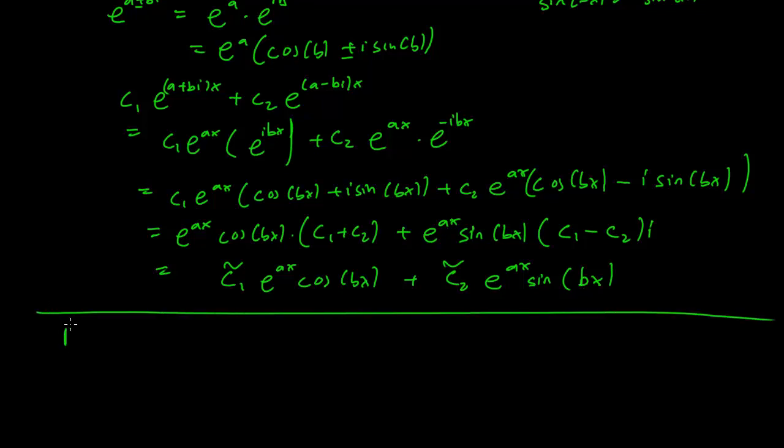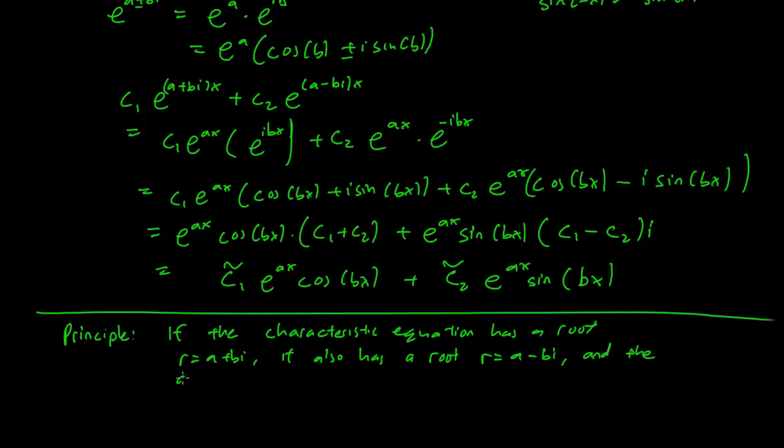And this means that we have a principle for complex roots. If the characteristic equation has a root r equals a plus b i, it also has a root r equals a minus b i. And the general solution of the differential equation contains the terms c1 e to the a x cosine b x plus c2 e to the a x sine b x. And this is how we handle complex roots.